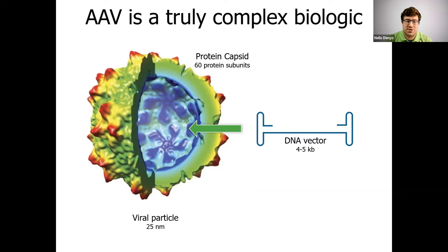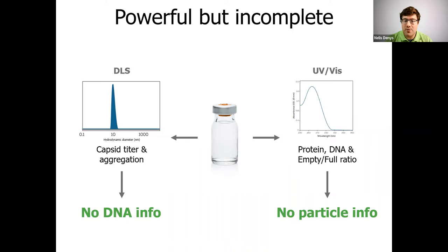Now, let's focus in on two technologies that are very powerful, but separately they are a bit incomplete. DLS and UV-VIS. Each of them tell a part of the story. DLS will get you information on your capsid titer and aggregation, but you actually don't know if there's anything DNA-wise inside your capsids, for example. On the other hand, UV-VIS will get you total amounts of protein, total amounts of DNA. You could look at their relation and get an empty full ratio out of it, but you actually don't know if any of that is actually contained in capsids at a certain size. So, each of these techniques get you valuable info, but neither tells you everything.